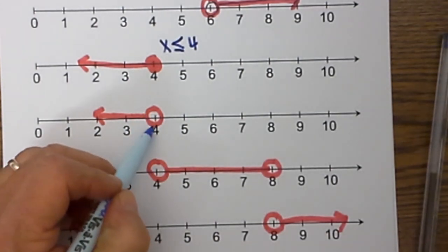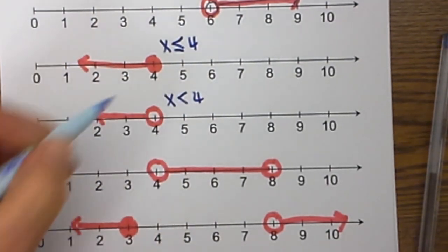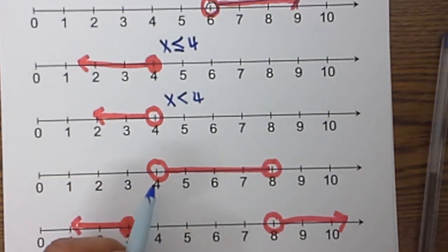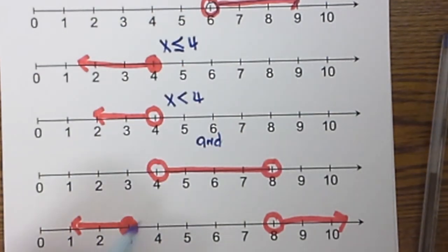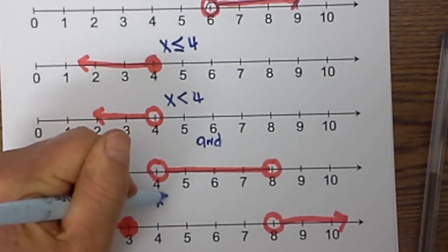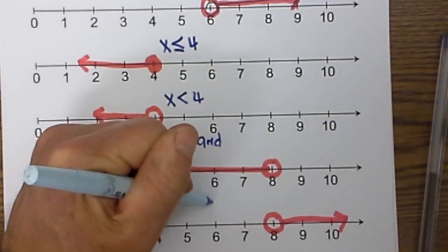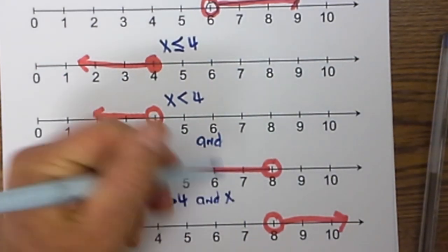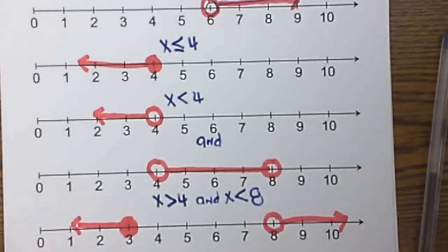This next example is open, so it would be x is less than 4. Now this next one is in between, meaning you use the AND, so it is going to be x is greater than 4, and notice it is open so it is greater than, and x is less than 8.